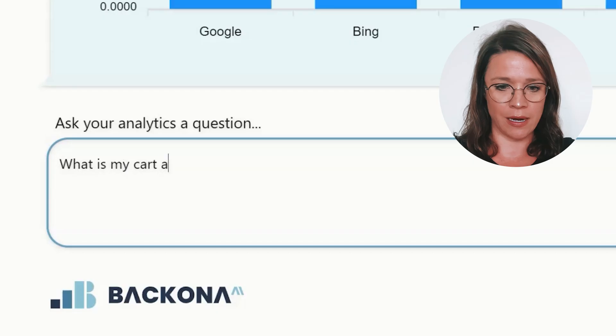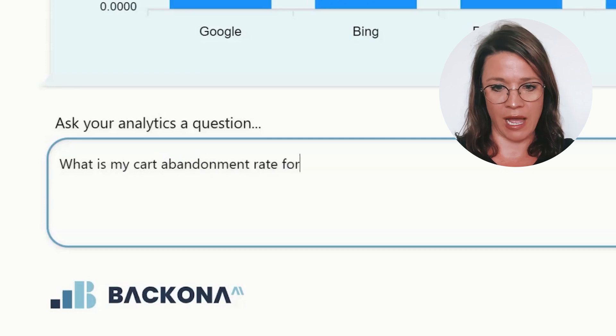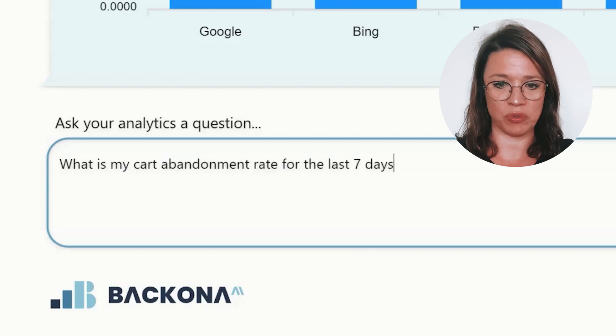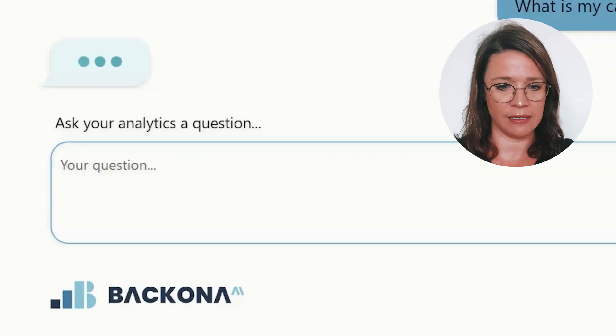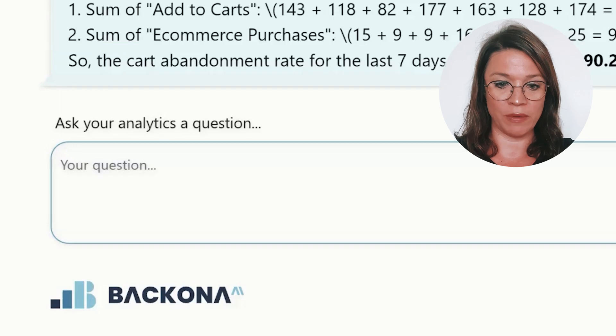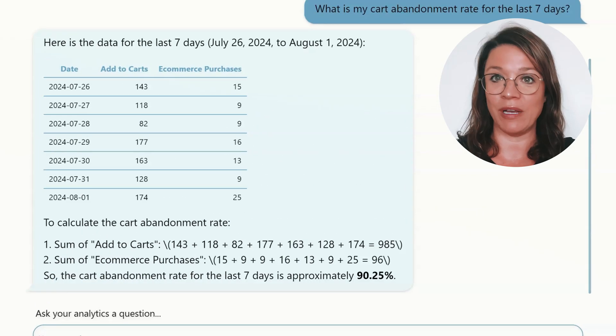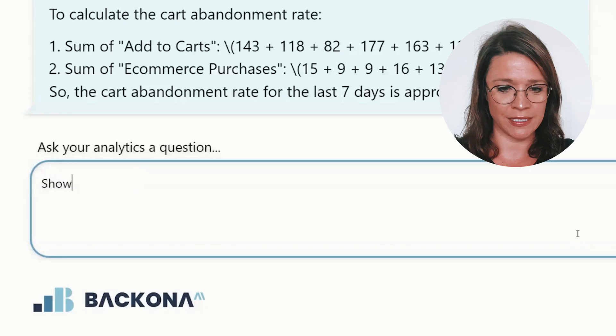So what is my cart abandonment rate for the last seven days? It shows me a summary as well as a detailed view. Now I want to see it in a line chart, so I'll ask it to show this in a line chart.